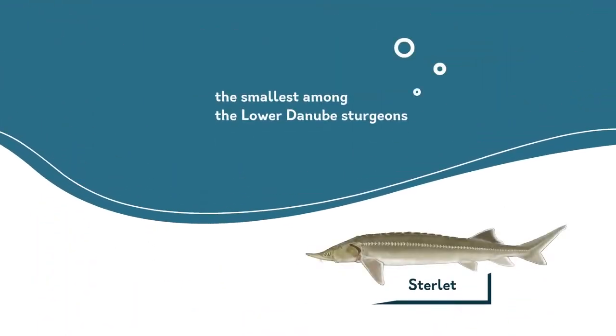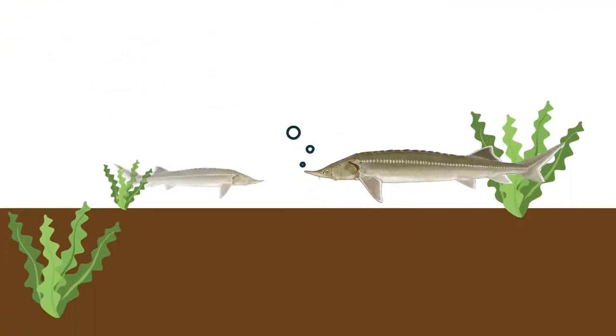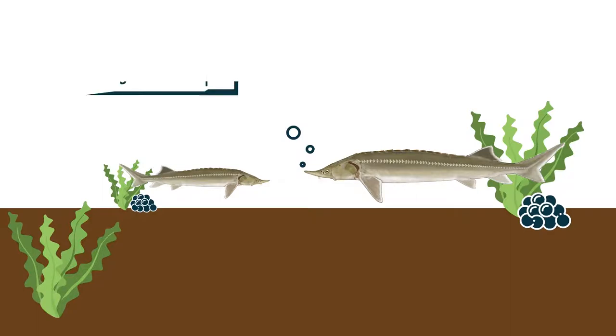Sterlet is the smallest among the lower Danube sturgeons. It reaches the mere 3 to 4 kilograms, which is tiny according to sturgeon standards, and it lives only in the Danube. Out of all sturgeon species, this is the one that starts spawning the earliest. This is why you will often find it in sturgeon farms. Now that I've told you about the small guy, let me introduce you to the others.